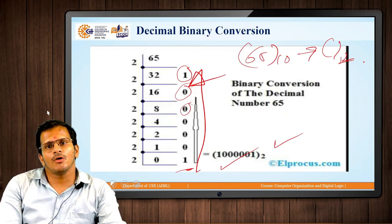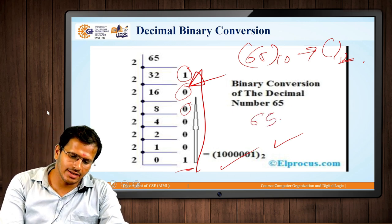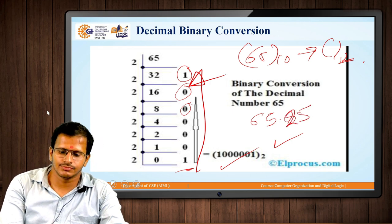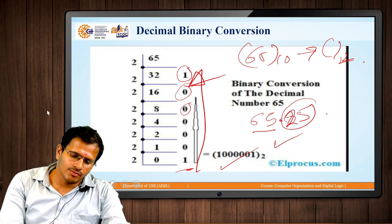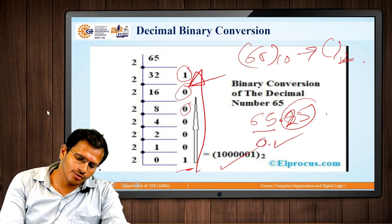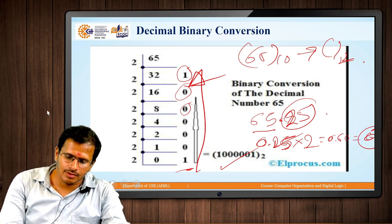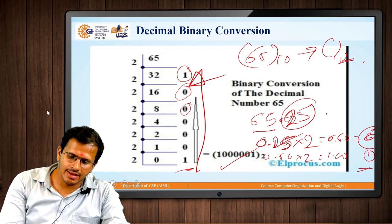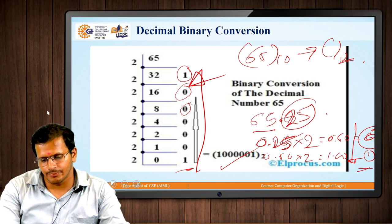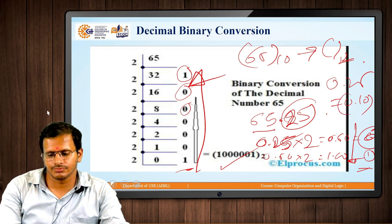One more thing to note: if the decimal value is 65.25, for example, we have already processed 65. The fractional part 0.25 should be multiplied by 2. We get 0.50; then 0.50 multiplied by 2 gives 1.00. Taking digits from downward to upward, 0.25 is represented as 0.10 in binary.